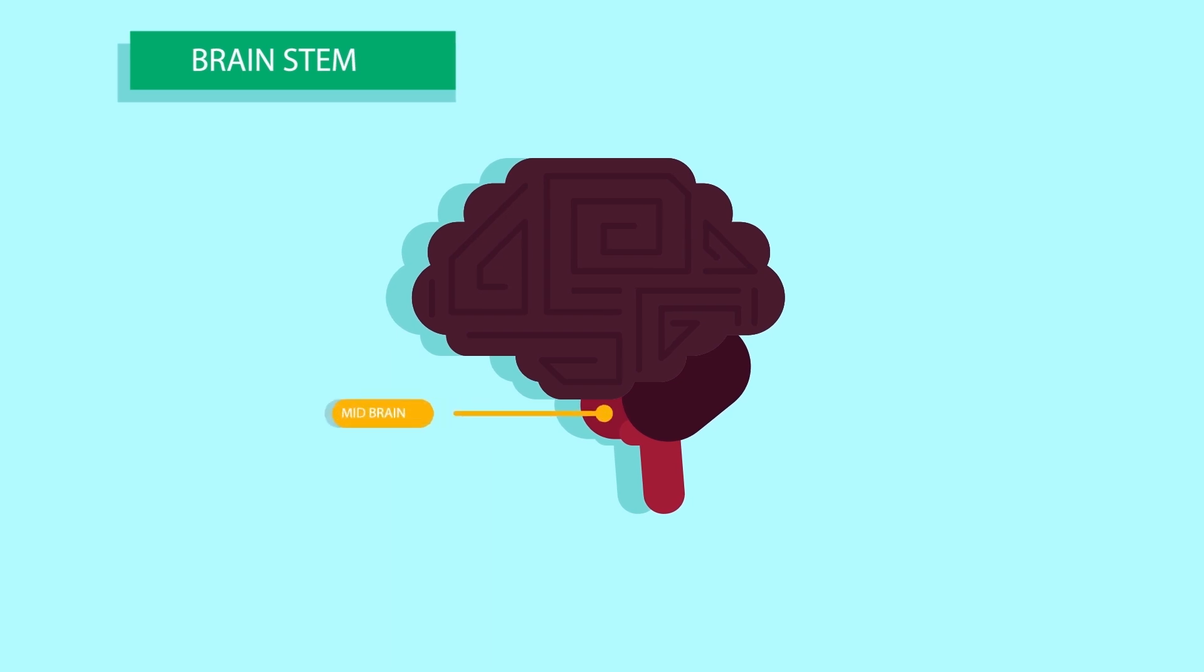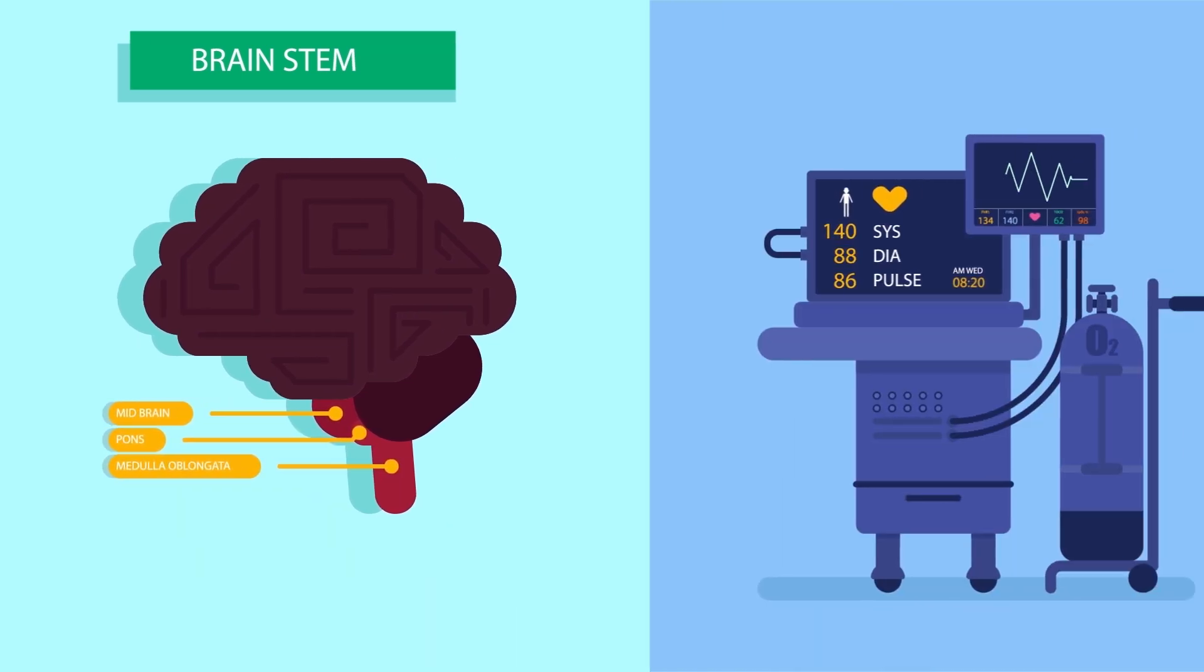Brainstem includes midbrain, pons and medulla oblongata. It controls your body's involuntary actions, like breathing, heart rate and blood pressure.